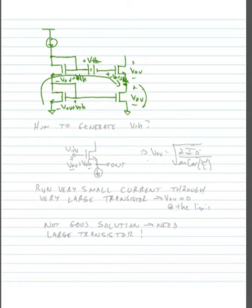Now, how would we generate a VT? So one way we might do it is you can imagine if we have a transistor and we run a current through that transistor. We know that the voltage from the gate to the source is equal to VOV plus VTH.